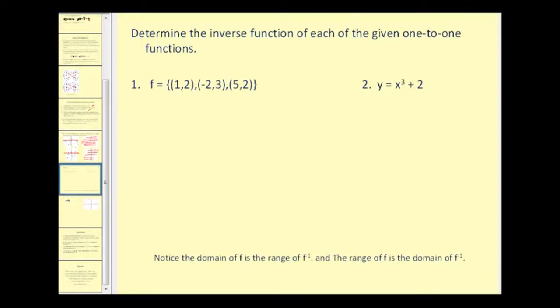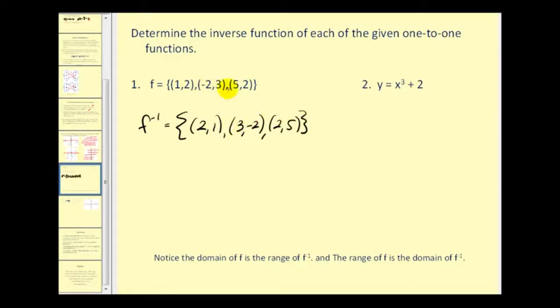Let's go ahead and find some inverse functions. Here's a function that consists of three ordered pairs. The inverse function would consist of the ordered pairs (2, 1), (3, -2), and (2, 5) — we simply interchange the x and y coordinates for each ordered pair to get the inverse function. Note that we were told the original functions were one-to-one, so we can find the inverse without questioning that first.